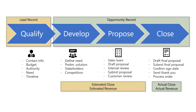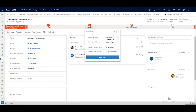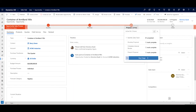Think of a business process flow as a series of predefined actions that in sequence guide a seller through a selling process that reflects your best practice. This image illustrates the stages and steps of our lead-to-opportunity business process flow. The steps used to qualify our lead occur in the lead stage and lead record. After qualifying our lead, the subsequent stages and steps are managed in the opportunity record. Looking at our opportunity for a container of Armband 100s, you can see the business process flow near the top of the form, easily accessible to our user.